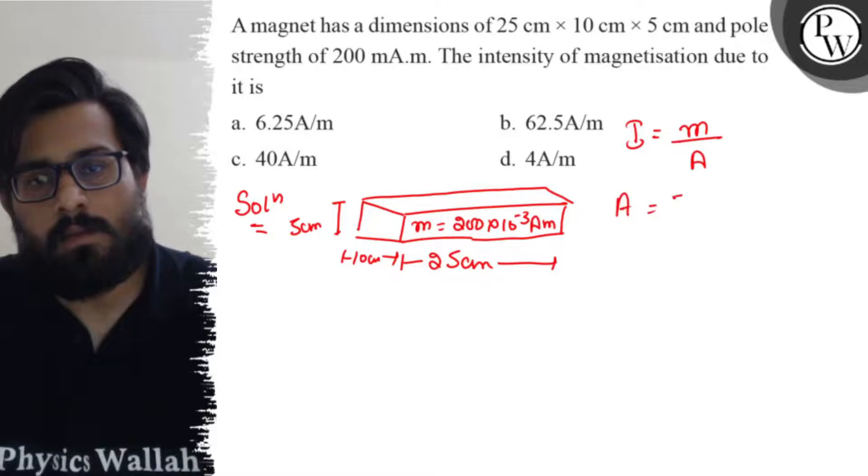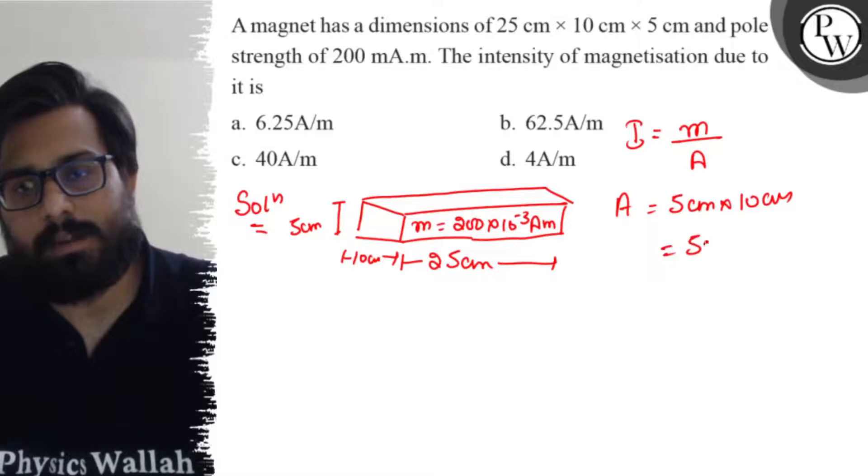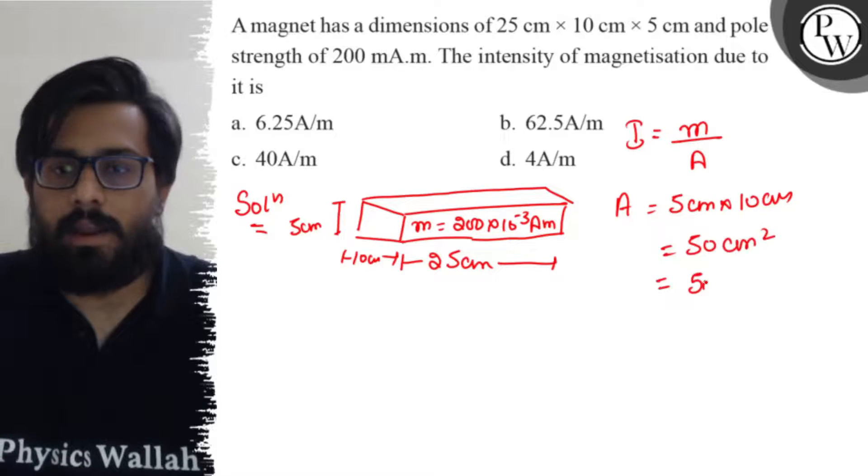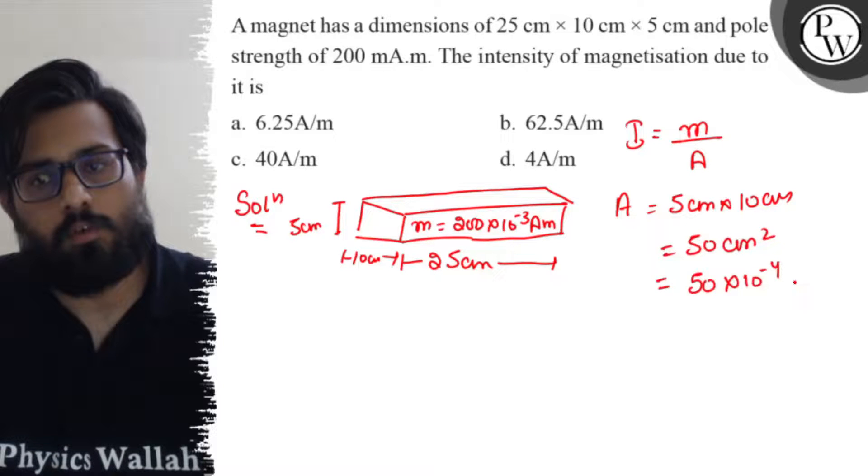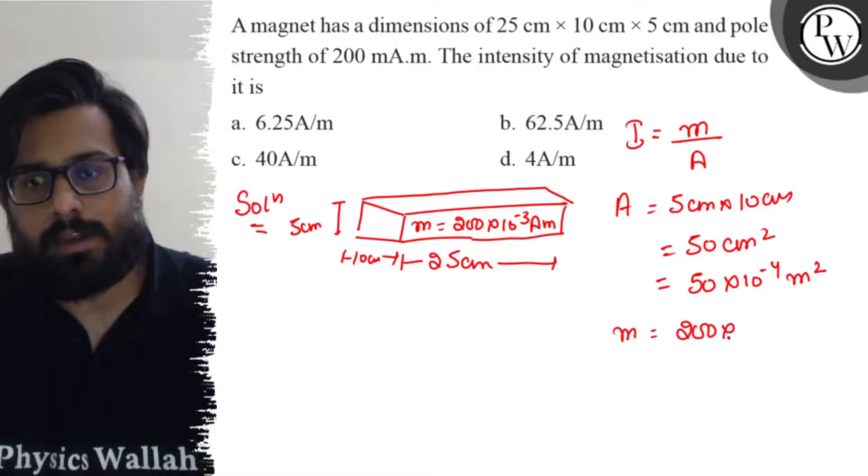So area of cross section is 5 centimeter × 10 centimeter, which comes to 50 centimeter square or 50 × 10^-4 meters square. Pole strength is 200 × 10^-3 ampere meter.